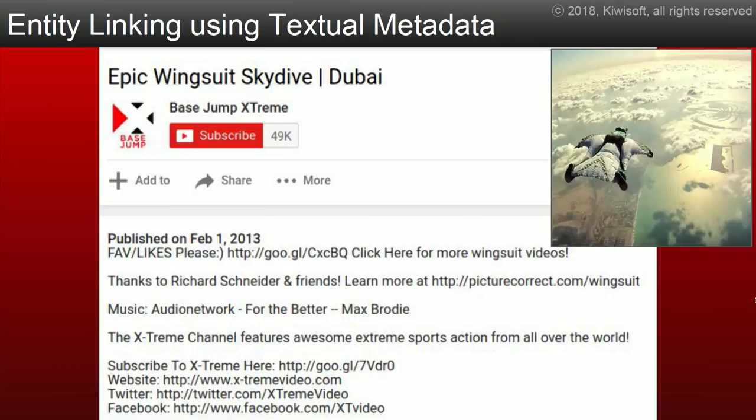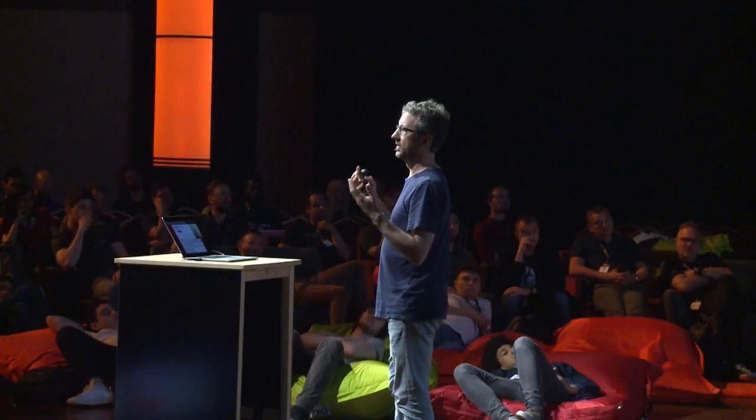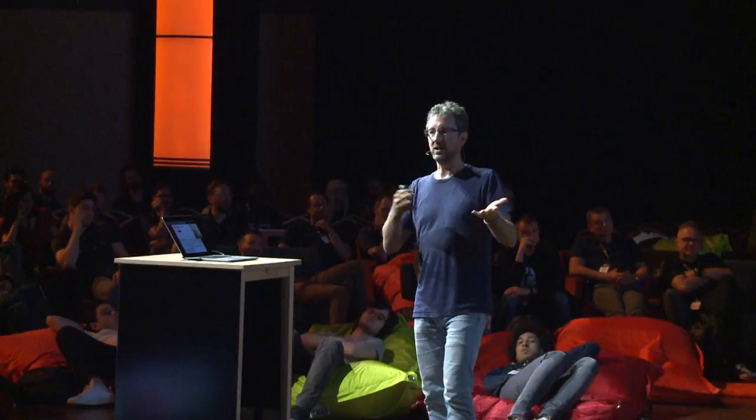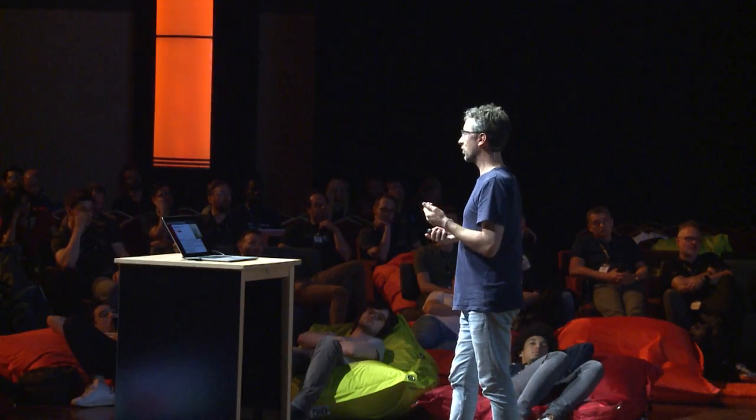Consider this video about someone doing wingsuit flying over Dubai. The title is 'Epic wingsuit skydive Dubai' — wingsuit appears three times. Why try to guess when it's actually written? So text is a big signal. But what vocabulary are you going to use? When training neural nets, you train on about 400 sports or a few hundred video games — not millions of topics. But there are millions of topics people enjoy on YouTube, so you want a big vocabulary. Where do we find this vocabulary? We're going to use a knowledge graph.